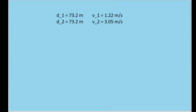In the first part of this problem, we walk 73.2 meters at a speed of 1.22 meters per second, and then we run 73.2 meters at a speed of 3.05 meters per second, and we're moving along a straight track here.